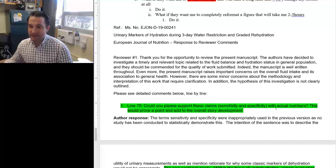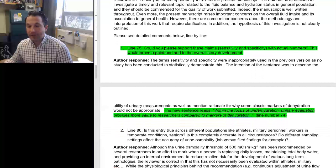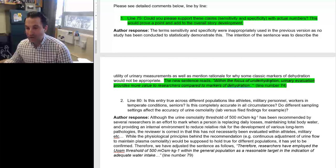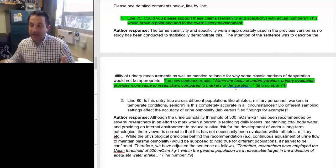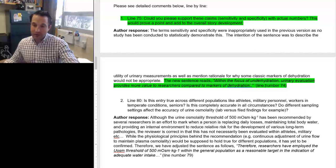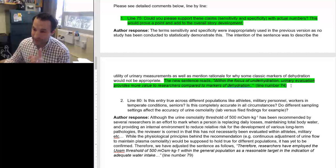So the two things you can do here when you're responding to your comments. Number one, include the addition in the response document. And then number two, provide the line number so that the reviewer can check this submission. So it's looking great. Here we go. Could you please support these claims? Sensitivity and specificity with actual numbers. This would prove a point and add to the overall story development. And if you look on the next page, I say, okay, the new sentence reads, and here's the actual quote that I put into the thing. And I said, you can find this on line number 74. So if the person is not comfortable with just reading this line of text right here, they can say, oh, well, if I got the document right next to it, I'll just look at line 74 and find it.